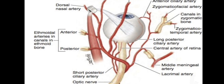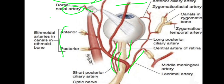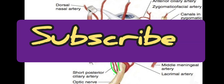To summarize, the branches of the ophthalmic artery are: the central retinal artery, posterior ciliary artery (including long and short posterior ciliary arteries), lacrimal artery, muscular arteries, anterior and posterior ethmoidal artery, supraorbital artery, meningeal arteries, medial palpebral artery, supratrochlear artery, and the dorsal nasal artery. I hope this video on the arterial supply of the orbit is helpful. Please subscribe, press the bell icon, like and share, and leave your valuable comments. Thank you.